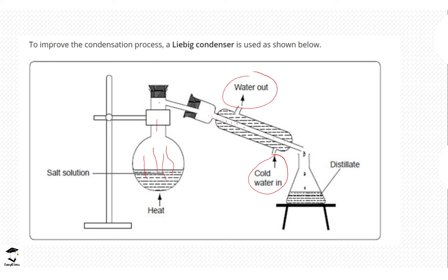The salt solution is heated, it evaporates, and the water vapor enters the tube and passes into the Liebig condenser. Note the correct spelling of 'Liebig condenser.' When the vapor gets into the Liebig condenser it condenses, and the water is collected. The solution that is collected is referred to as the distillate — in this case, water is what is collected first.